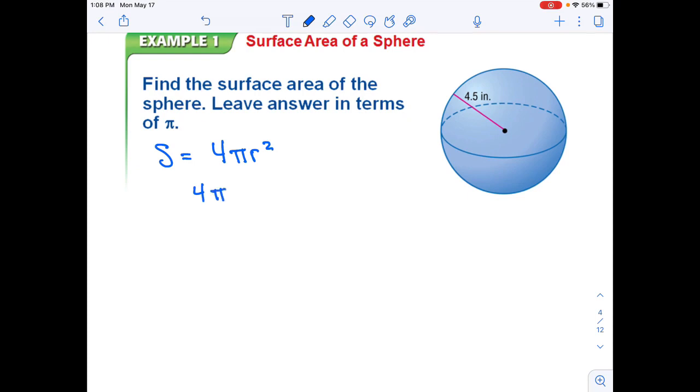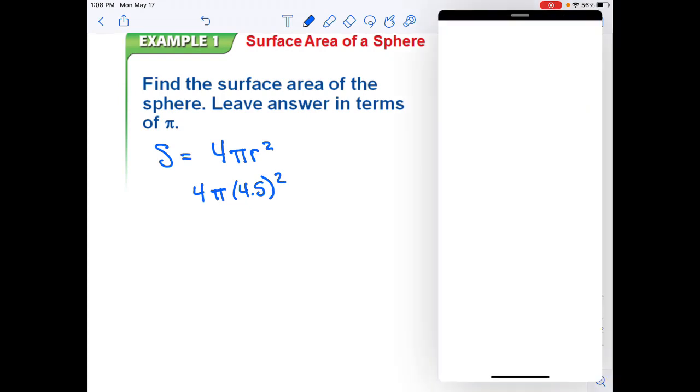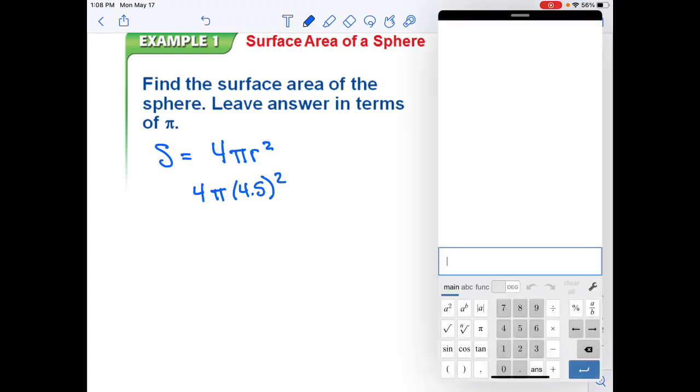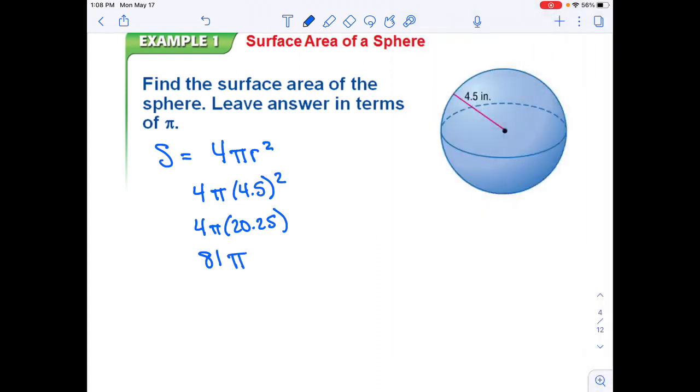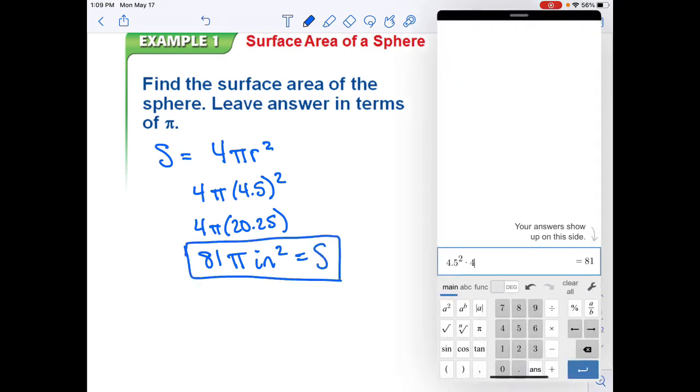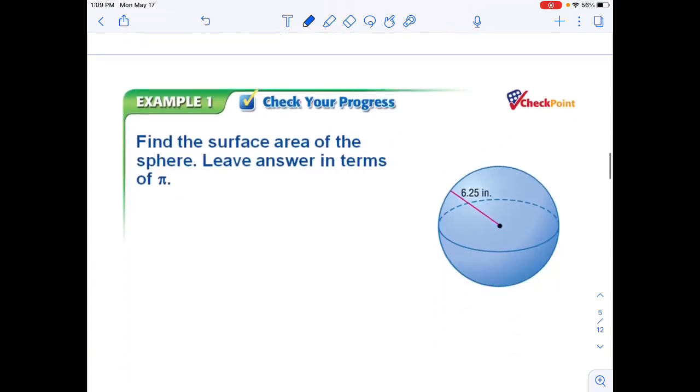We have 4 times π times our radius, which they give us, which is 4.5. So we take 4.5 squared. We get 4 times π times 20.25. We end up getting 81π as our solution to our surface area, and our label is square inches. On to the next one.